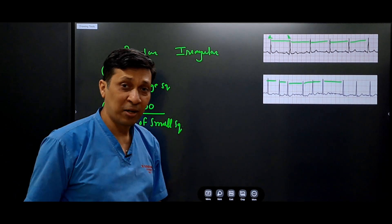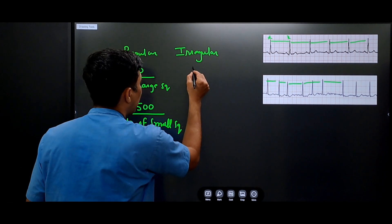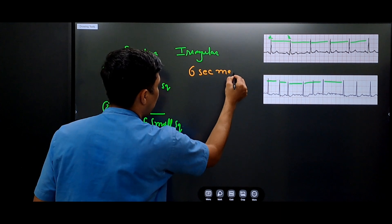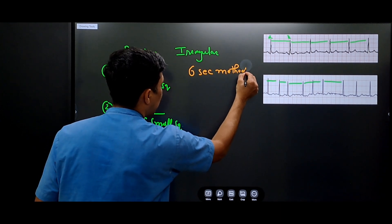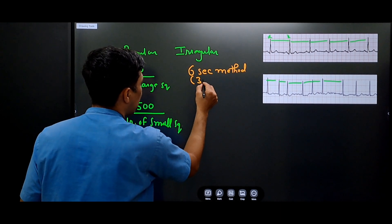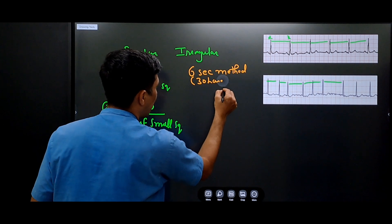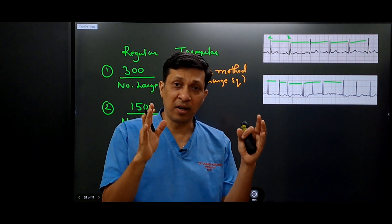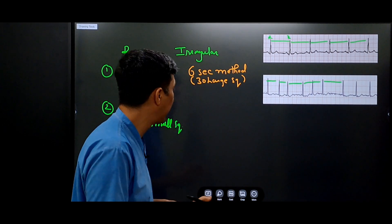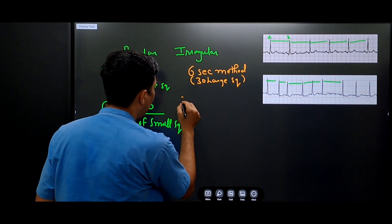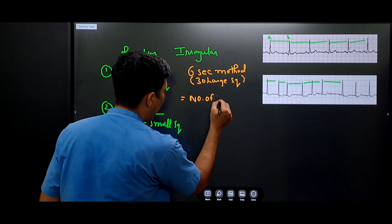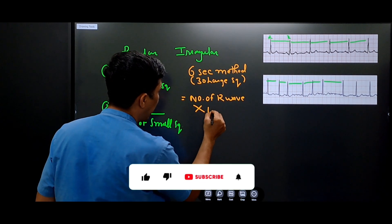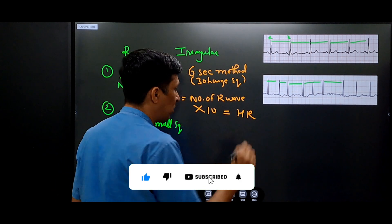When the rhythm is irregular, the method used is called the 6-second method, or 30 large box method. Since 30 large squares equals 6 seconds, what we do is count the number of R waves within a period of 30 large squares, then multiply by 10 to get the rate.